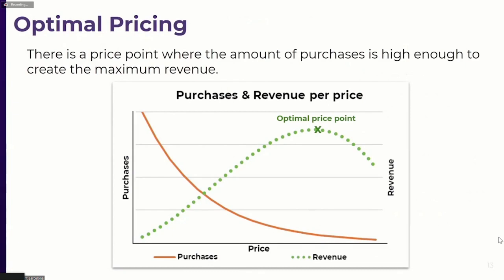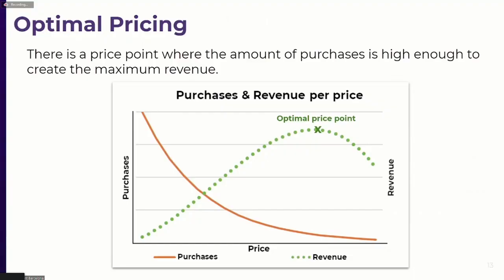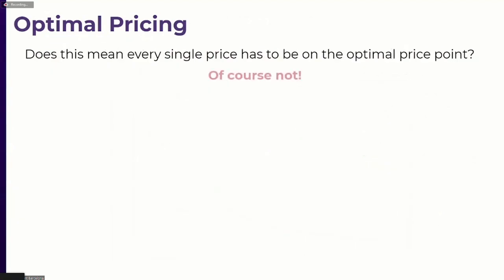Because the curve is not a straight line, not every single price generates the same amount of revenue. If it were a straight line, increasing the price by one dollar would lose exactly one dollar's worth of demand — but that's not reality. Since it's a curve, every item has an optimal price point where the increase in price decreases demand to exactly the degree that maximizes revenue.